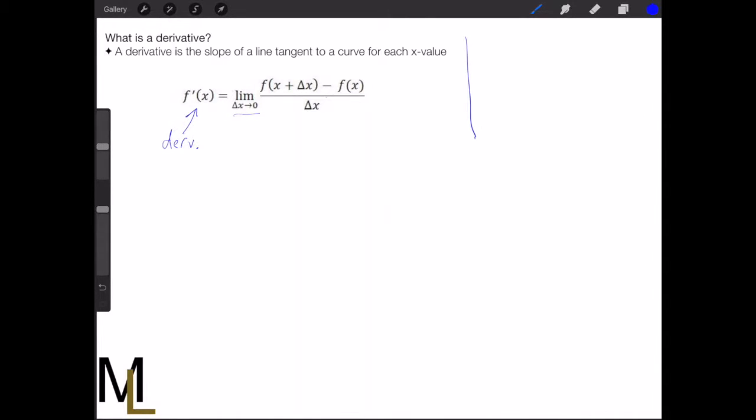Where that comes from might seem a little confusing at first, but it's actually quite simple. The key is to keep in mind that we're looking for the slope of a line tangent to the curve. So for some given curve like this, we'll have an x axis and an f of x axis.